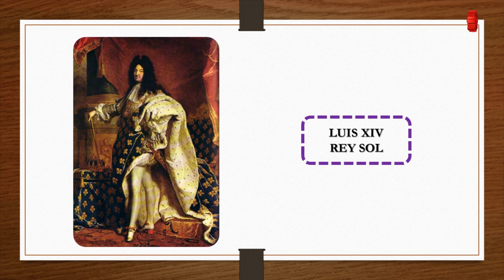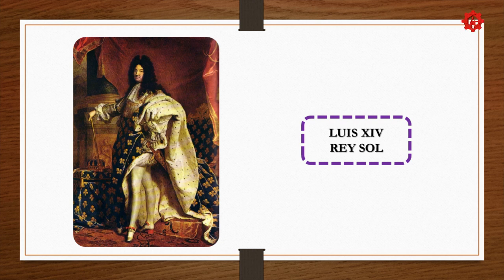Here we have another image of the man I just mentioned, Luis XIV, better known as the Sun King. As you can see, he is a man with a lot of style for the era. He wears a wig made of natural hair, and there is something very particular about him that causes some controversy — he is wearing heels. It's known that heels were originally first used by a man, and that man was Luis XIV, the Sun King, not by a woman.